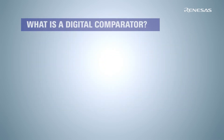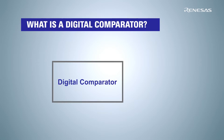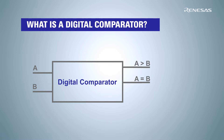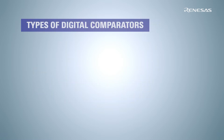A digital comparator is considered to be one of the important devices used in digital systems while executing arithmetic or logical operations. It has two digital input terminals, A and B. Based on their signal — one or zero — the comparator can have three different output results: A equals B, A is greater than B, and A is less than B.